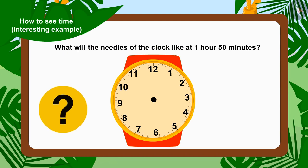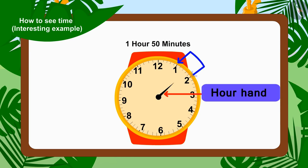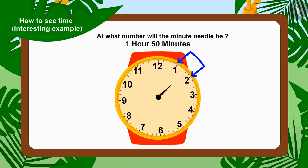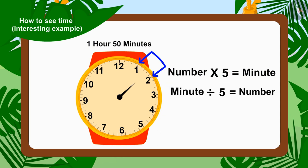Because a few minutes have passed since one, the hour needle will be between numbers one and two. And at what number will the minute needle be to show fifty minutes? This is very easy, as we multiply the number on clock by five to find the time in minutes.